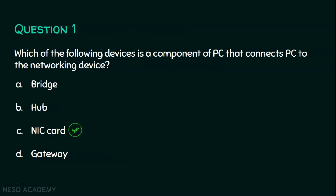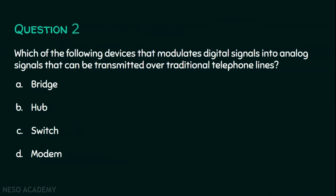We will move on to question number two. Which of the following devices modulates digital signals into analog signals that can be transmitted over traditional telephone lines? Option A: bridge. Option B: hub. Option C: switch. Option D: modem. The answer to question number two is option D, modem.